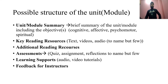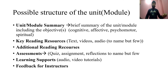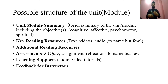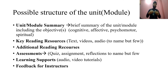Now I want to suggest a possible structure for a unit when developing Google Classroom. First, write a unit summary or module summary, which includes a brief overview of the unit objectives — those objectives may align with cognitive, affective, psychomotor, and spiritual domains. Then provide key reading resources, which could be text, video, or audio. Include additional reading resources if necessary. Then define assessment criteria — you may use the concepts of classwork, homework, or project assignments. Assessment tools may include quizzes, assignments, and reflections.